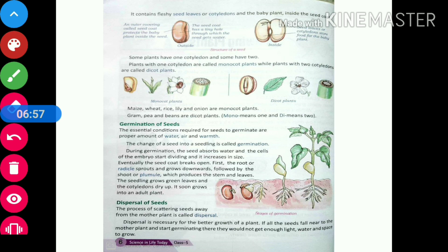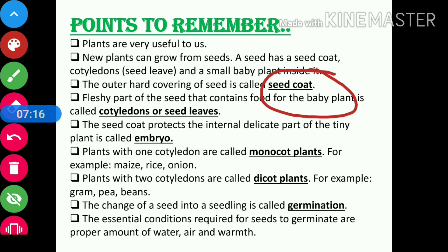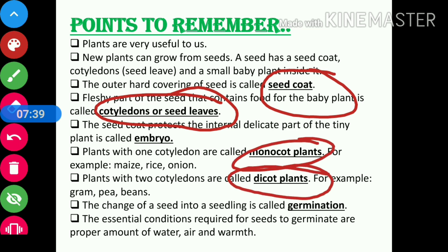Before we move further, let us review what we learned in today's video. We learned about the seed coat, cotyledons — also known as seed leaves — and the embryo. We also got to know about monocot plants and dicot plants, and finally we learned what germination is.